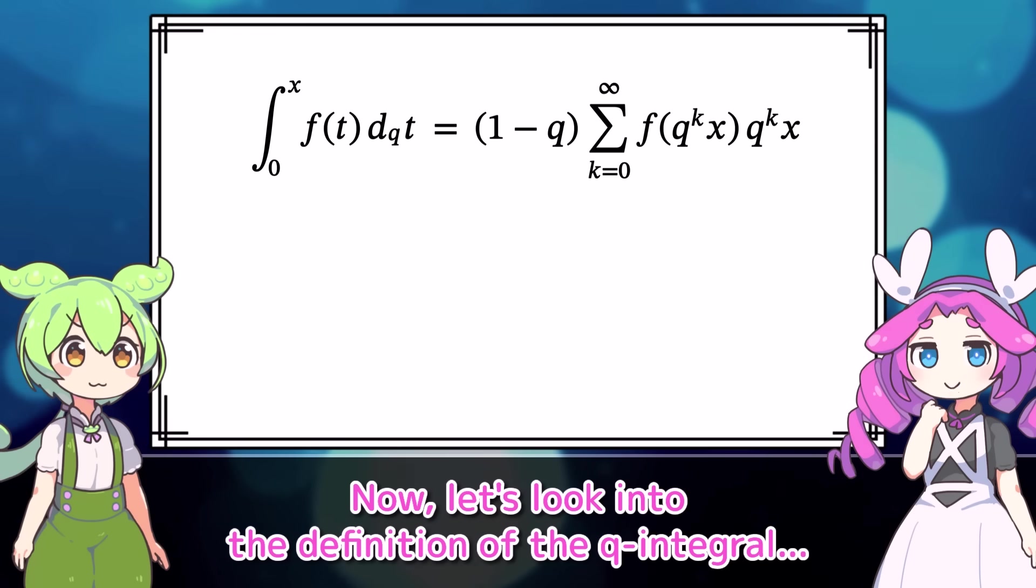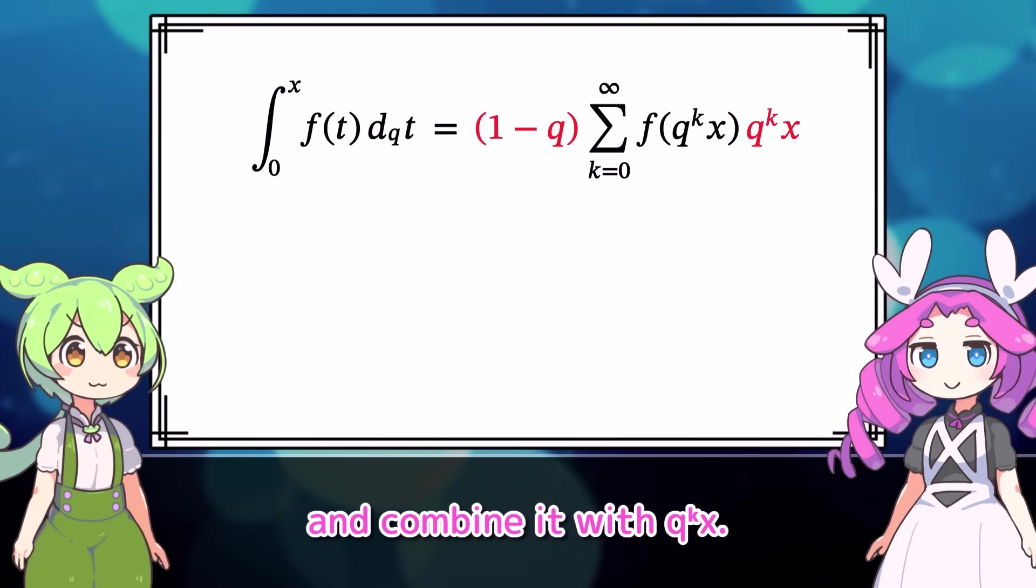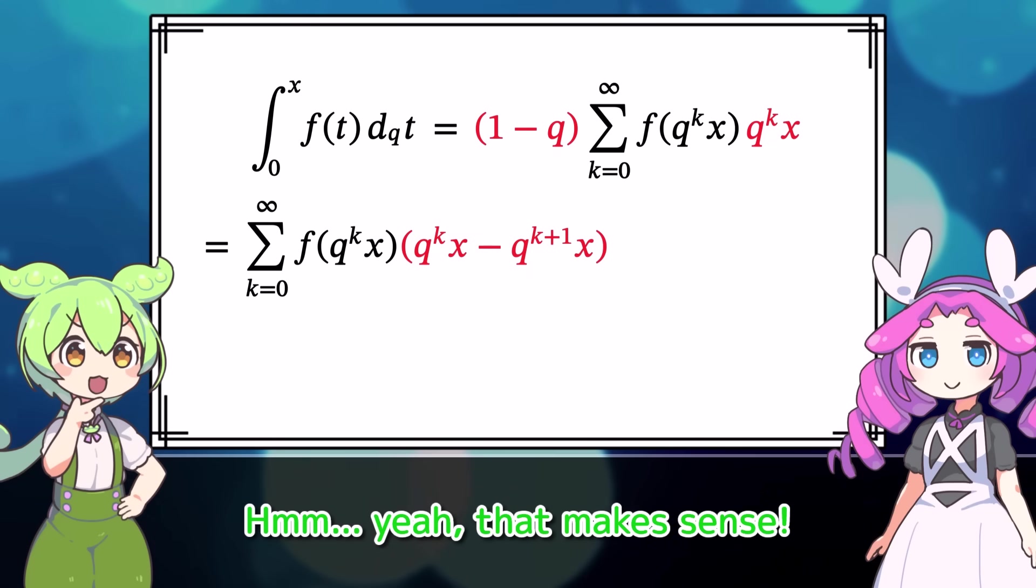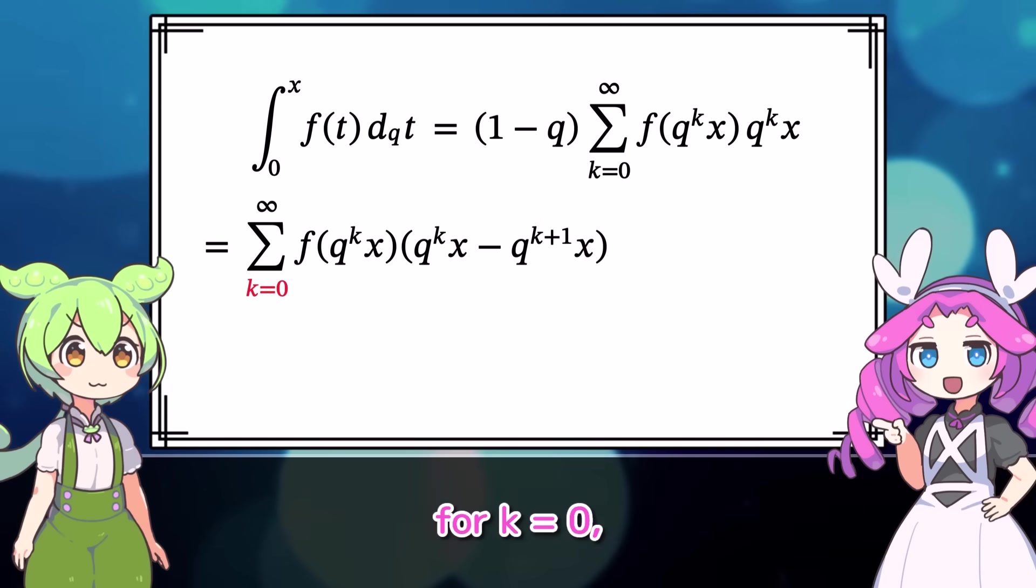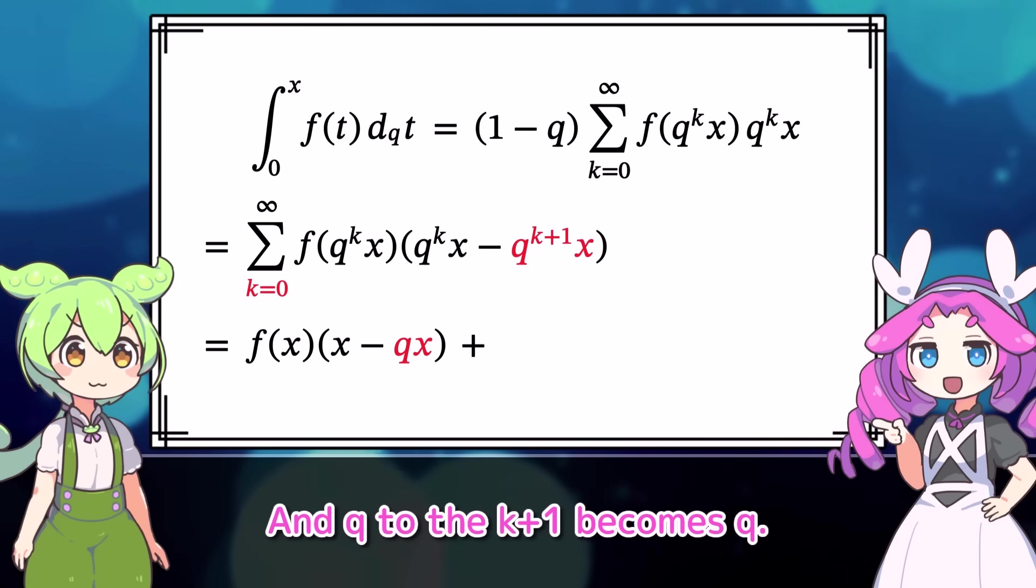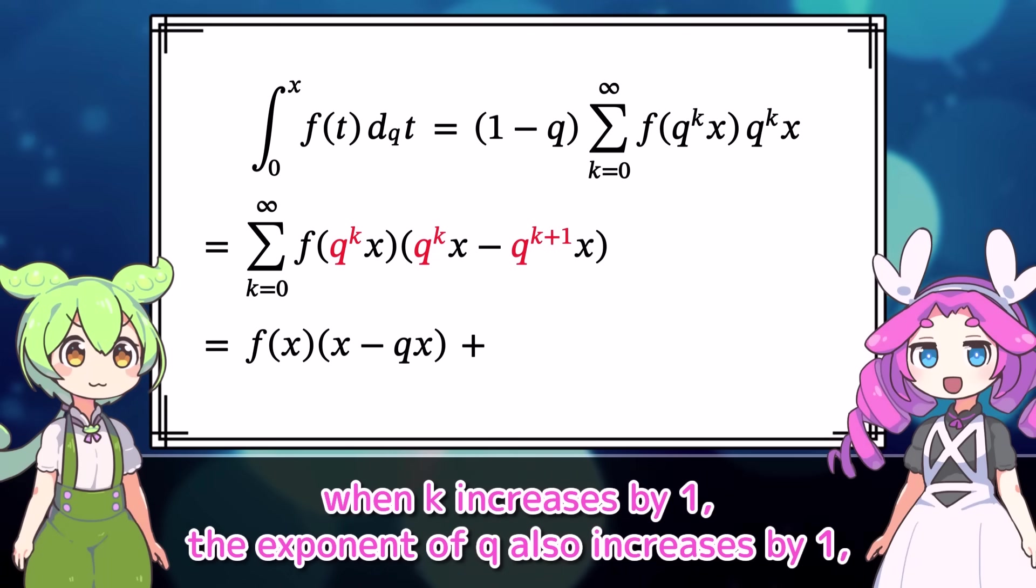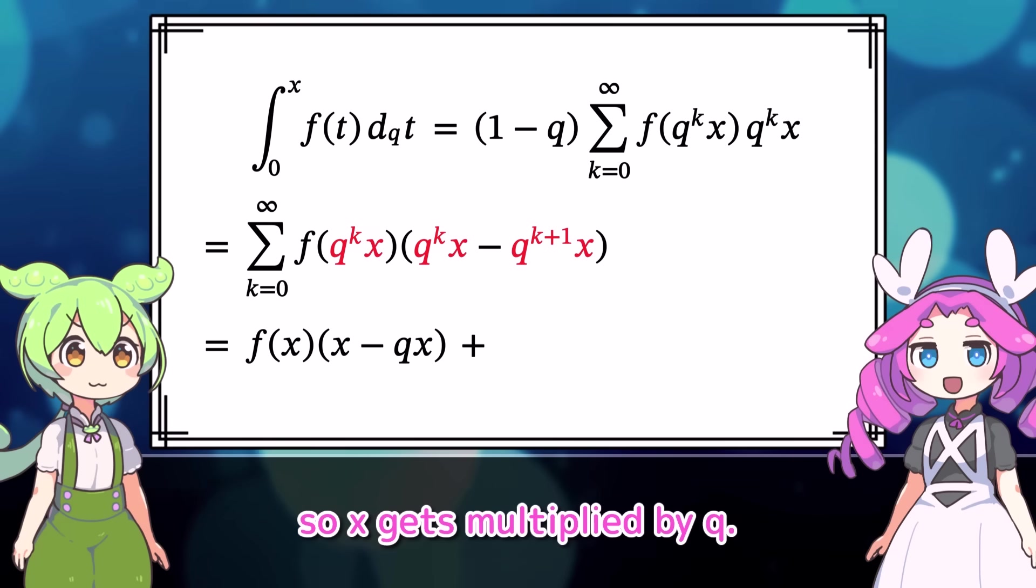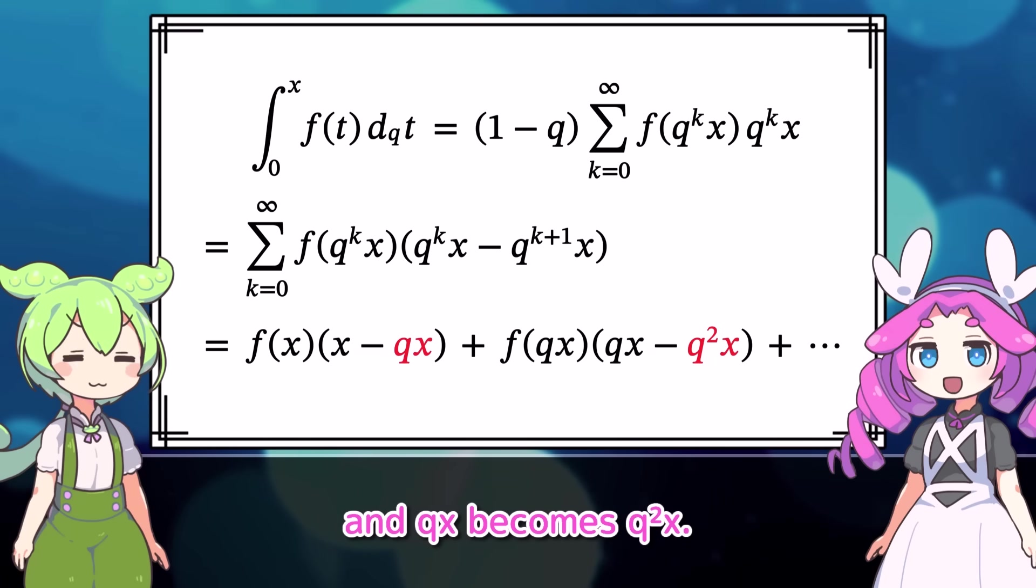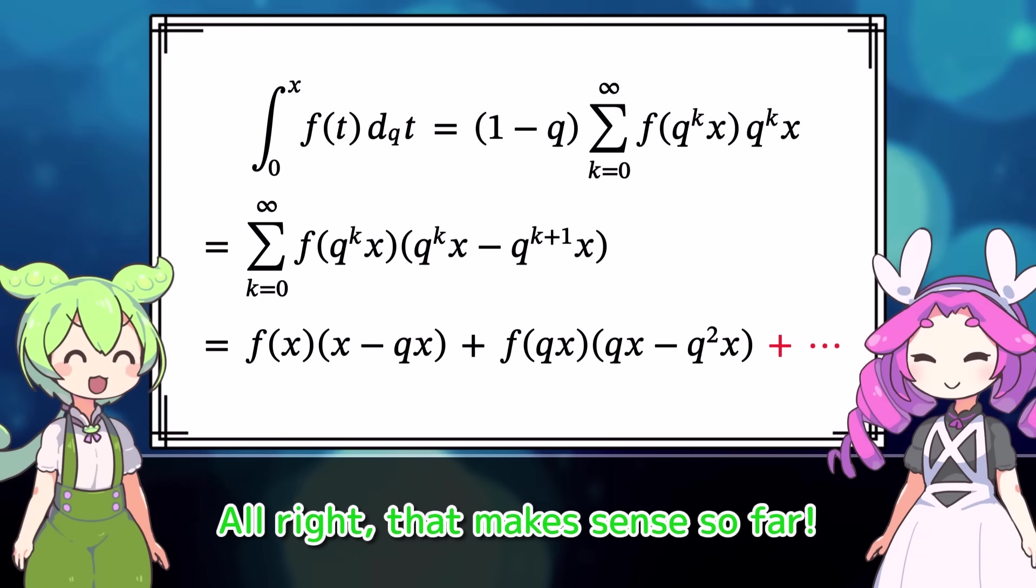Yes! Now let's look into the definition of the q-integral. First, let's move the 1-q inside the summation, and combine it with q to the k times x. Then it becomes like this. Hmm, yeah, that makes sense. When we expand this infinite sum, for k equals 0, q to the k becomes q to the 0 equals 1. And q to the k plus 1 becomes q. I see, I get it now. For the next term, when k increases by 1, the exponent of q also increases by 1. So x gets multiplied by q. Then x becomes qx. And qx becomes q squared x. This process continues infinitely. Alright, that makes sense so far.